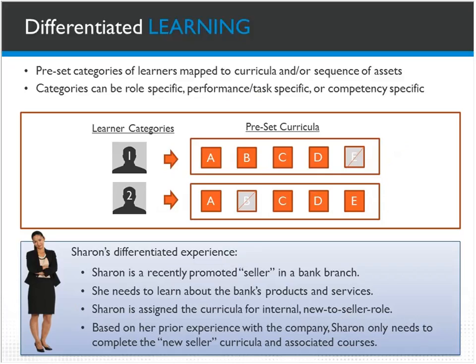When we look at differentiated learning, this is probably the most common strategy currently employed to reduce and target content for specific areas. These are preset categories of learners mapped to a curriculum or sequence of assets. The categories can be role-specific, performance or task-specific, or competency-specific. Learners in different categories receive different elements of a preset curriculum — only the content relevant to what they need to do.